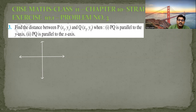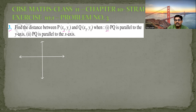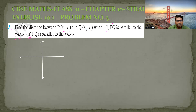Today's question is number three. They are asking: find the distance between two points P and Q whose coordinates are x1, y1 and x2, y2. One condition is when PQ is parallel to the y-axis. The second case is when PQ is parallel to the x-axis. It's very simple, but it will be somewhat confusing — I will make it very easy.